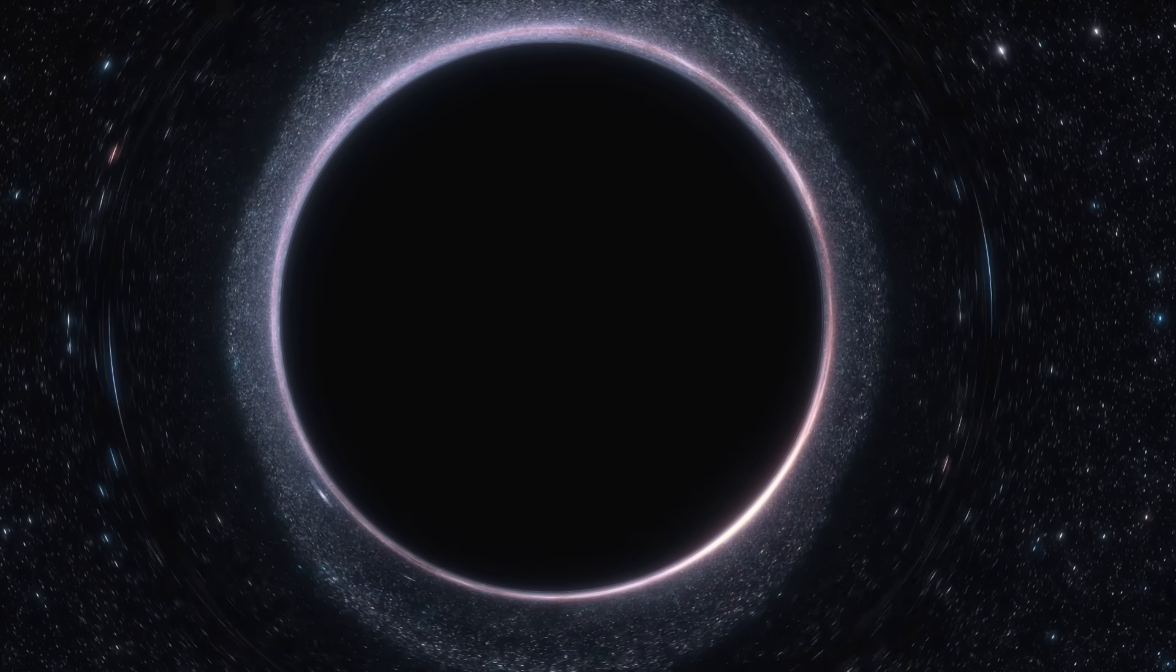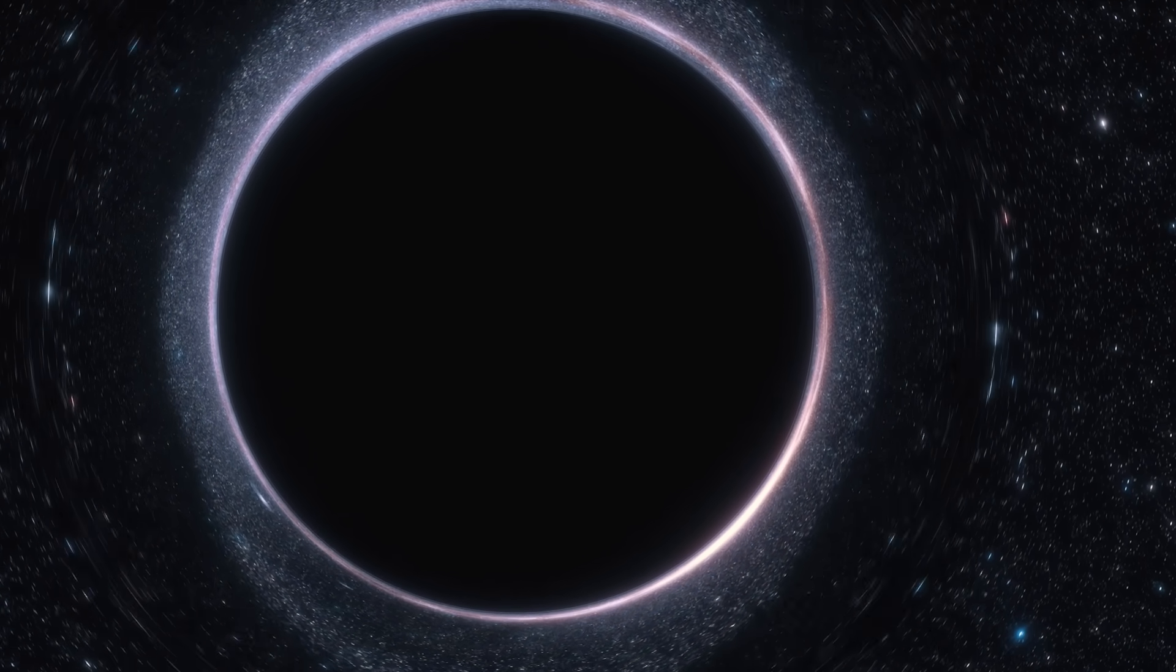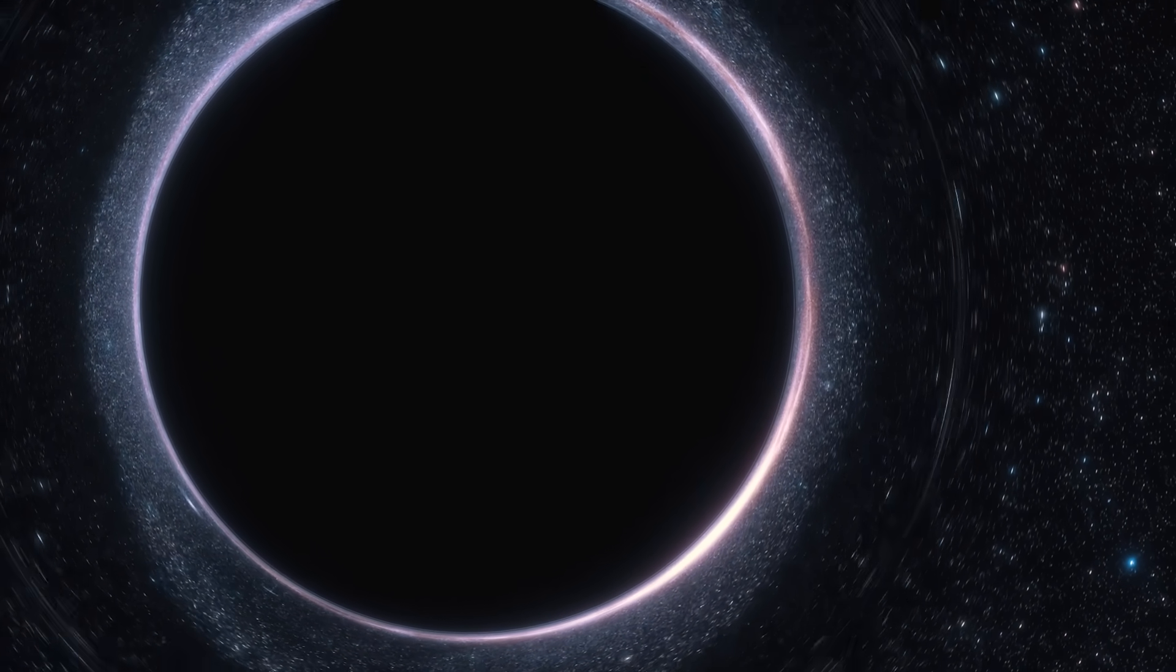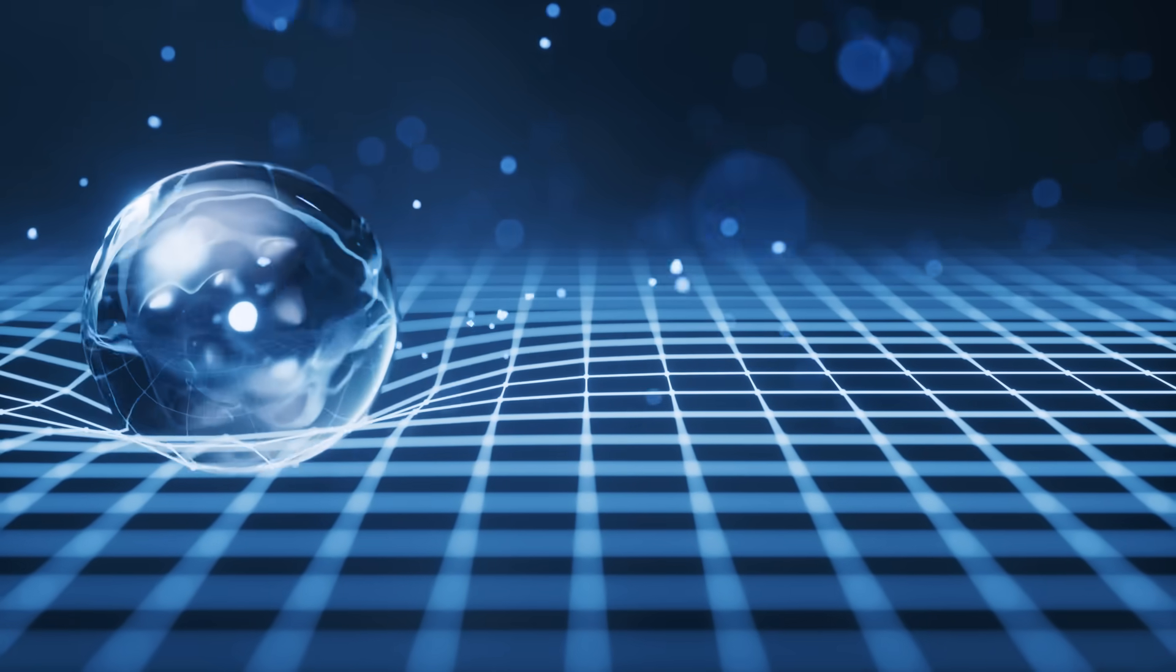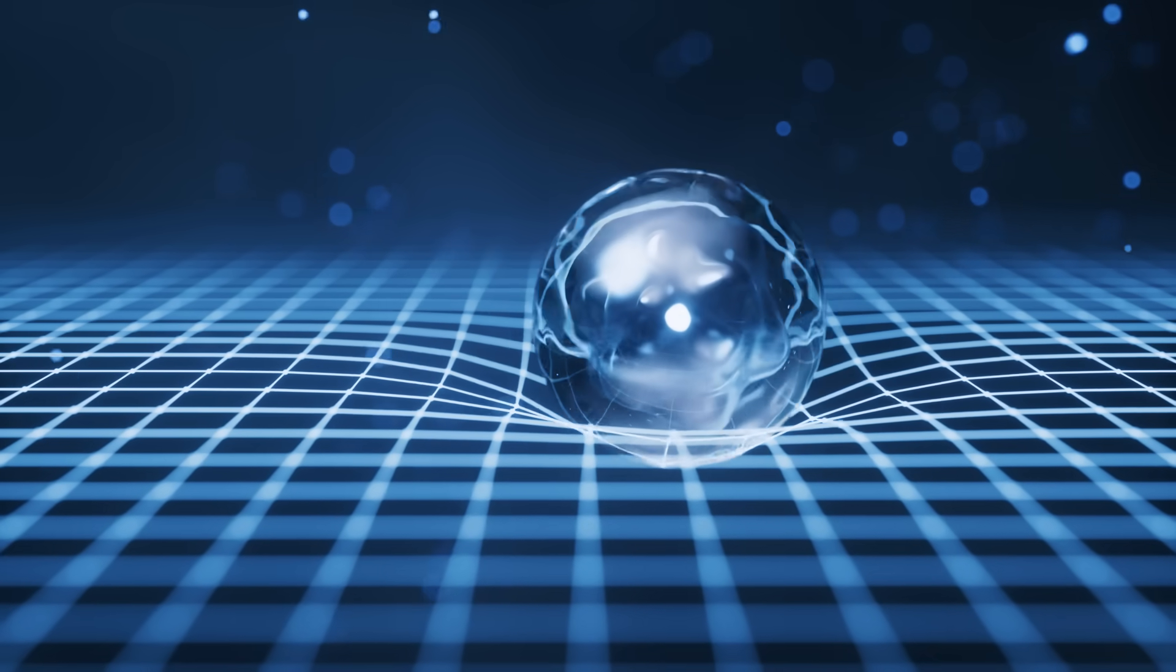Now, we've all heard that nothing can escape a black hole. But this is where things get tricky. Near an event horizon, particles and antiparticles spontaneously pop in and out of existence, annihilating one another almost instantly. But what if one of these particles manages to escape the stronghold of a black hole?